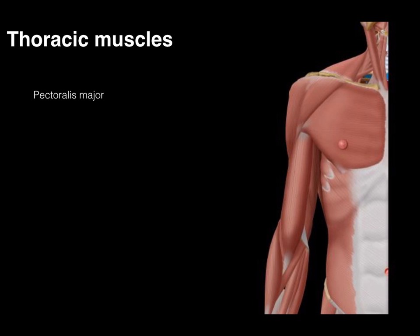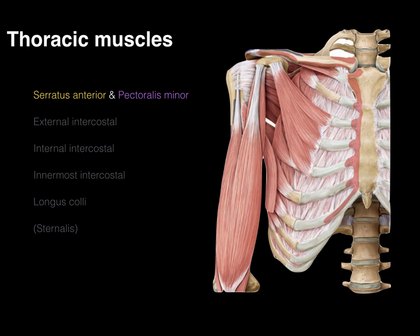Let's do the thoracic muscles in an anterior view. The first muscle is our pectoralis major, that upper limb muscle that comes from the sternum and then goes over to the humerus — an upper limb muscle that migrated to the chest, covered in more detail in the upper limb. Removing that, we now see the serratus anterior coming from ribs 1 through 8 or 9 to the medial margin, and the pectoralis minor — both in that supracostal plane.